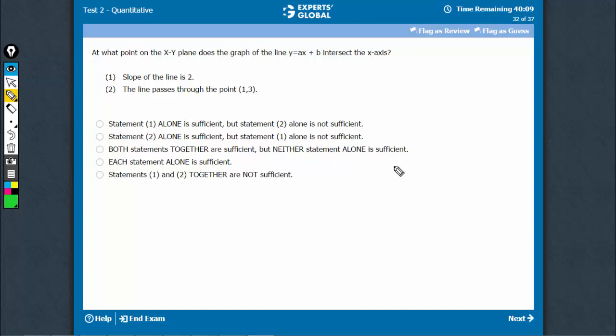The required point is when y equals 0. So when y equals 0, x equals minus b upon a. Therefore, the point needed is minus b upon a, comma 0. This is the point at which this graph would intersect the x-axis, when y equals 0.